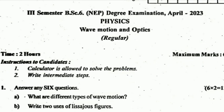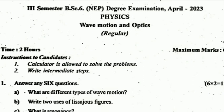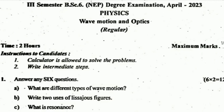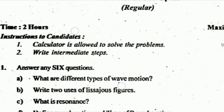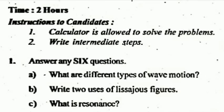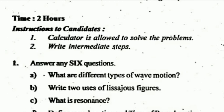The time is two hours, maximum marks is 60. Instructions to the candidates: calculator is allowed to solve problems, write intermediate steps. First we will solve two-mark questions — answer any six questions. Let's see the questions: A) What are different types of wave motion? B) Write two uses of Lissajous figures. C) What is resonance?